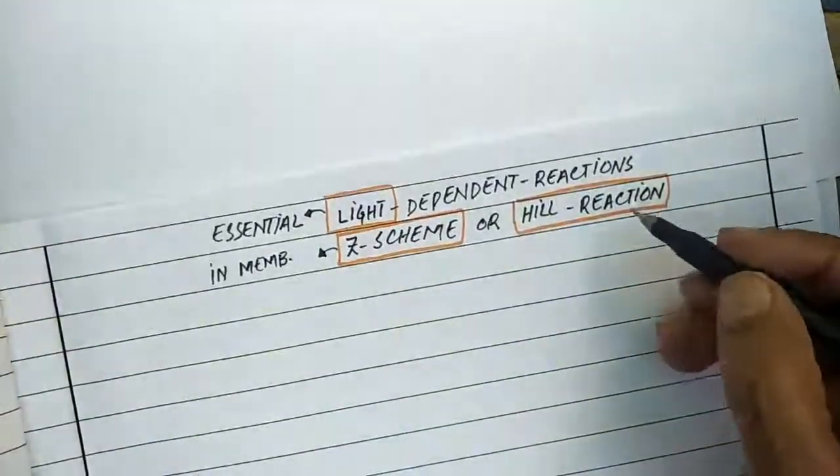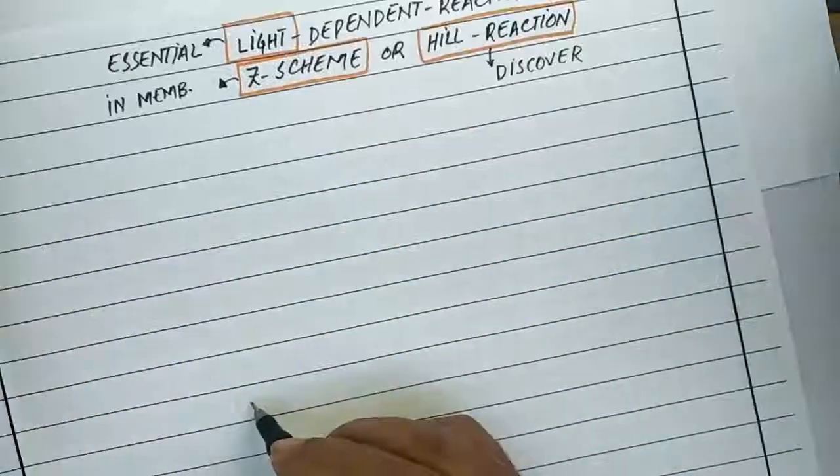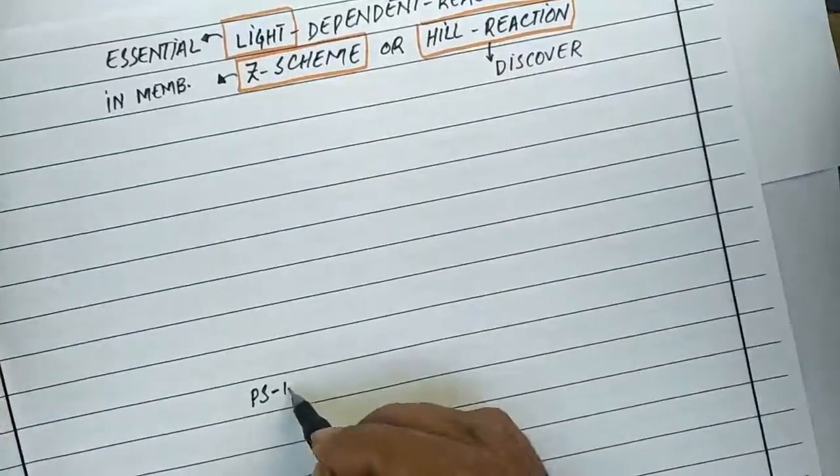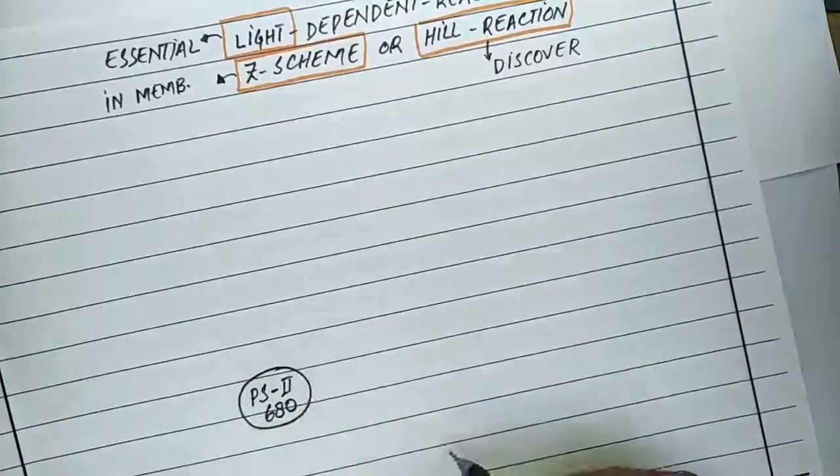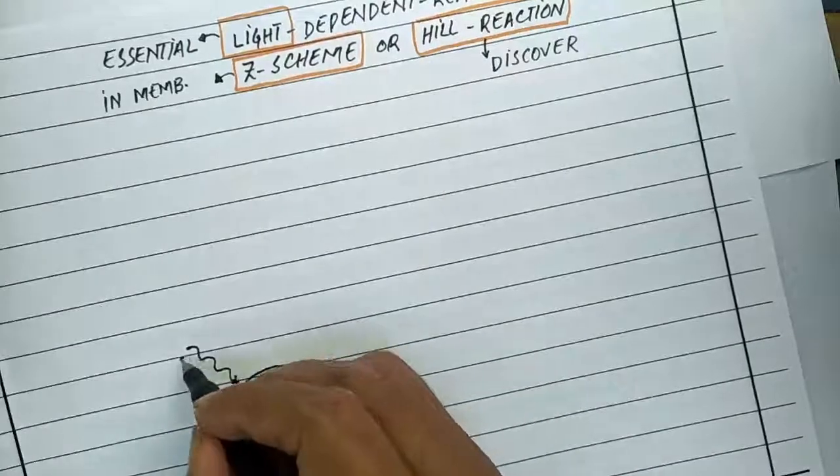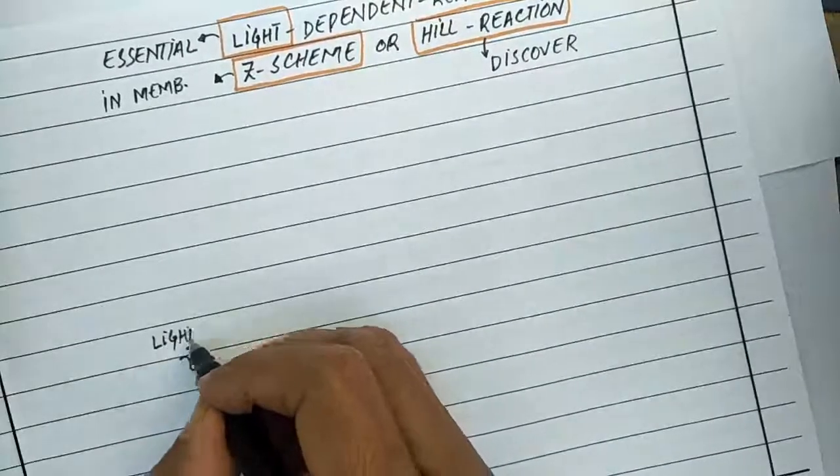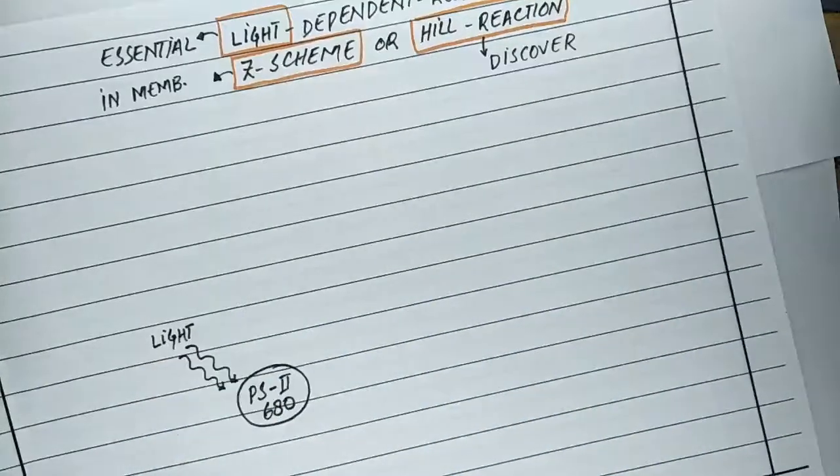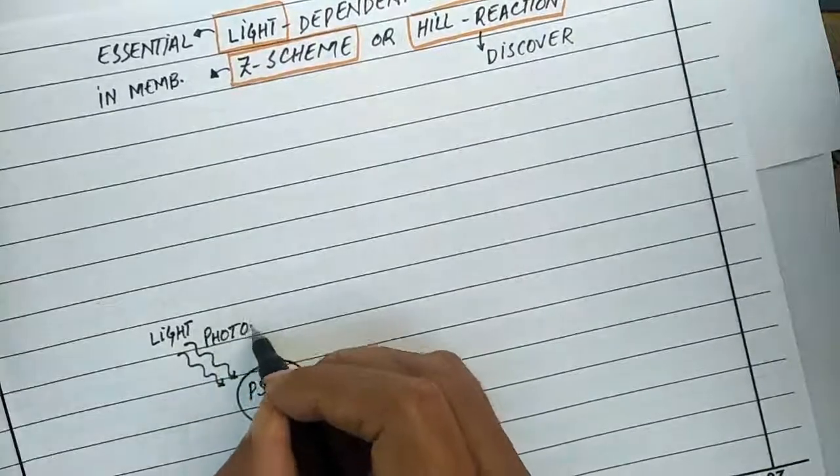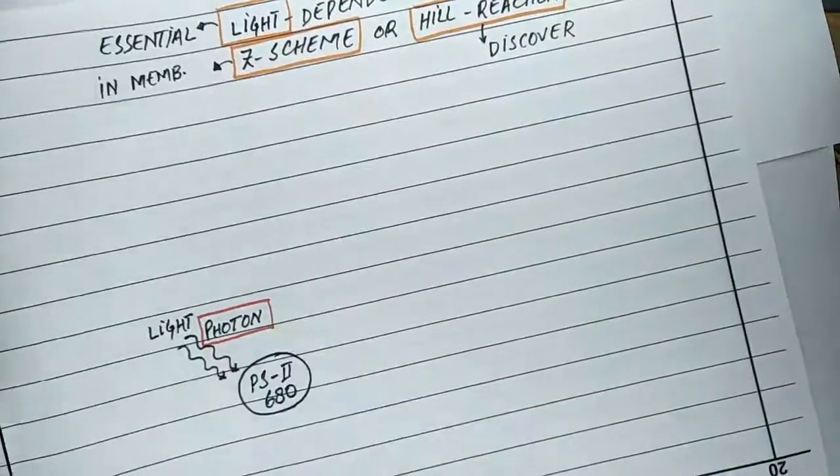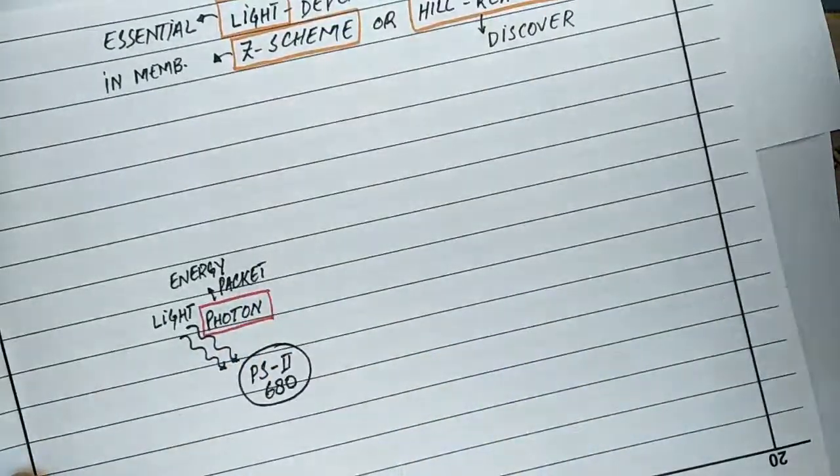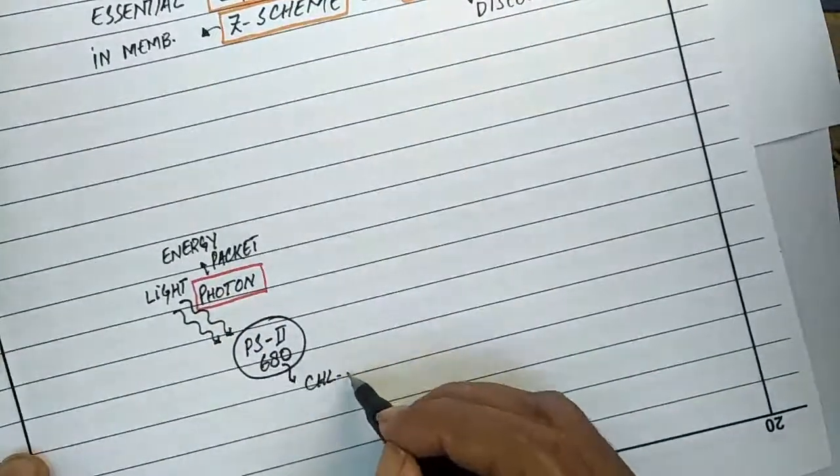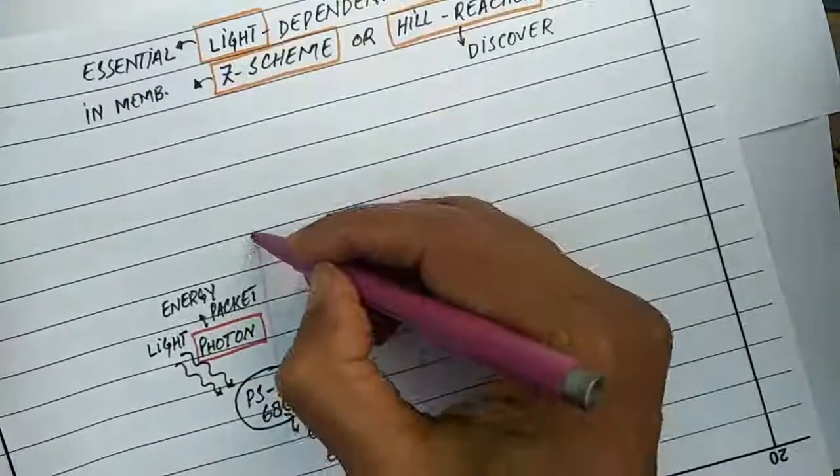due to its discoverer. Chlorophyll molecules in photosystem II absorb red light of 680 nanometers. Light is in the form of photons, and when these high-energy photons hit the chlorophyll molecules, electrons are removed from the chlorophyll and the molecules get oxidized.